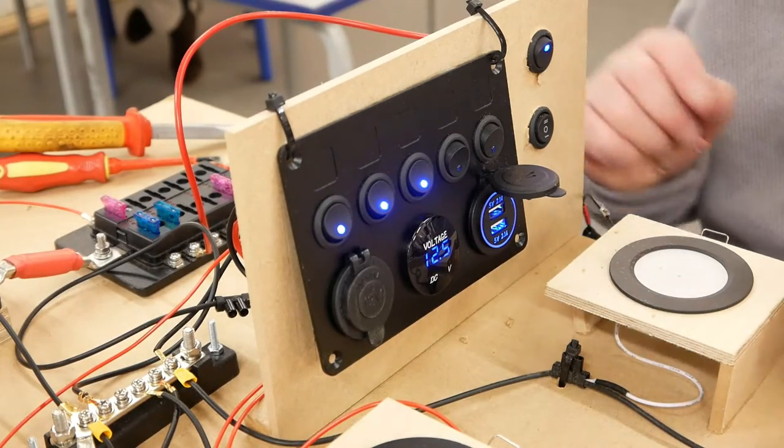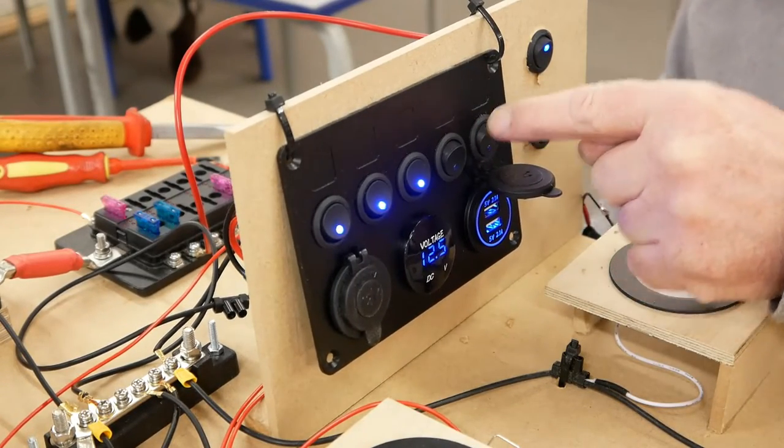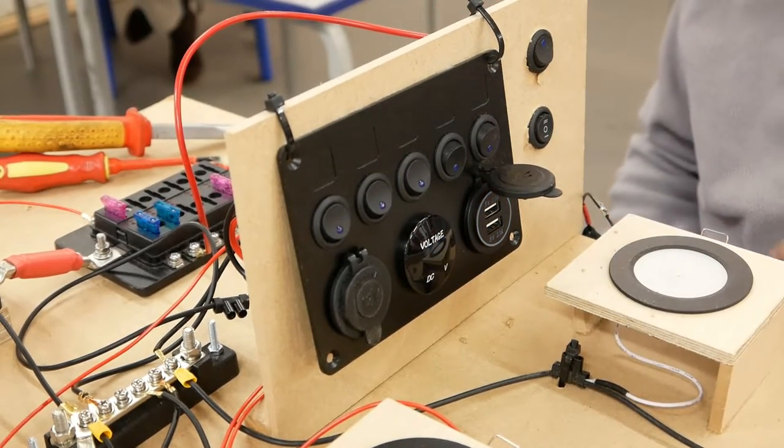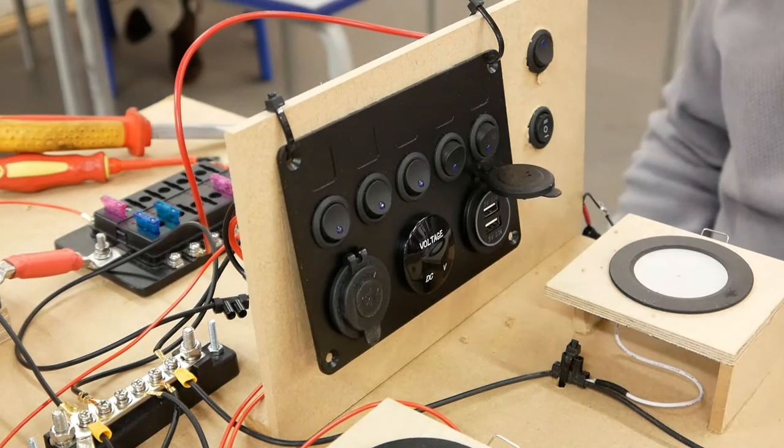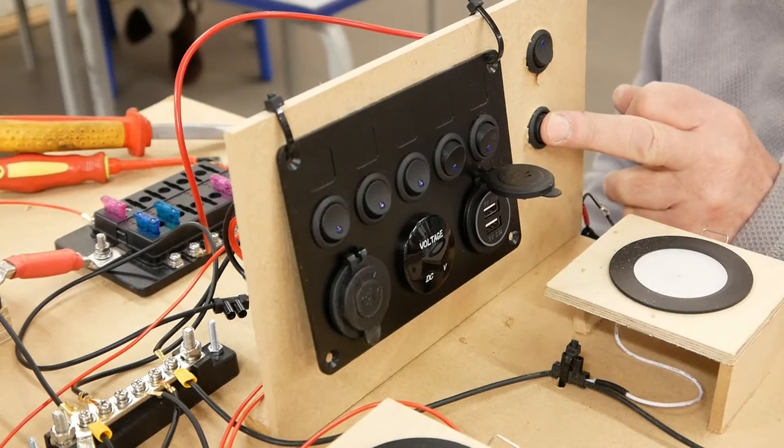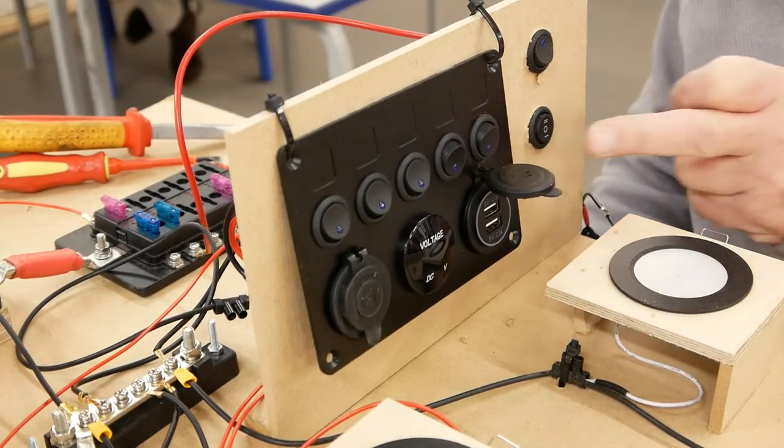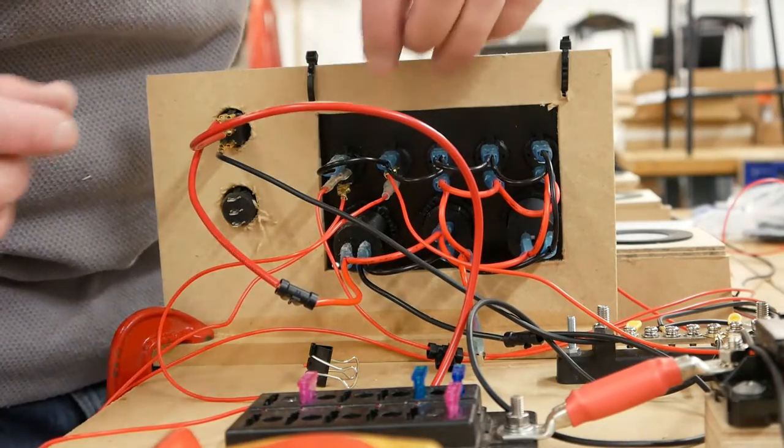So back to the control panel. These two switches control the lighting circuits, this switch controls the control panel. It turns everything off except for the two lighting switches that go back to the fuse box, so it's all dead now. What I want to do is have a two-way switch in here, so I'm going to remove this switch and replace it with a two-way switch.